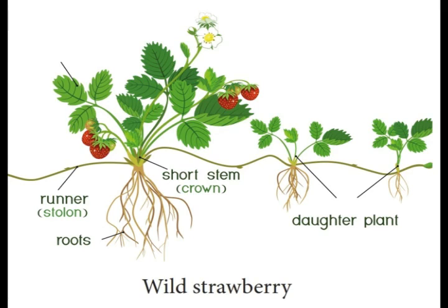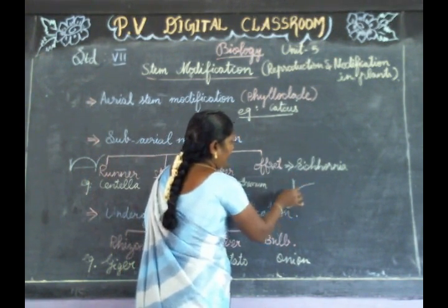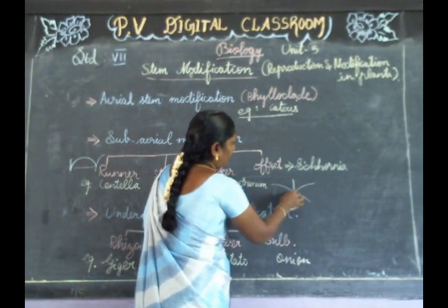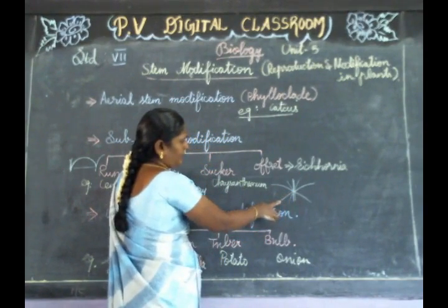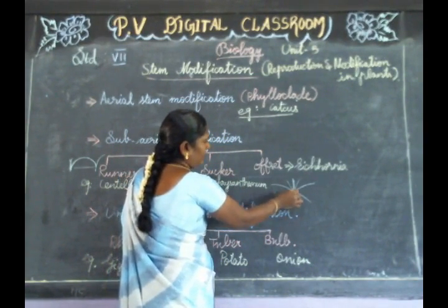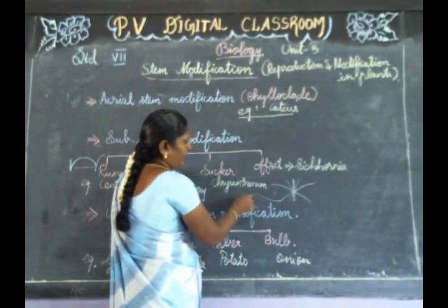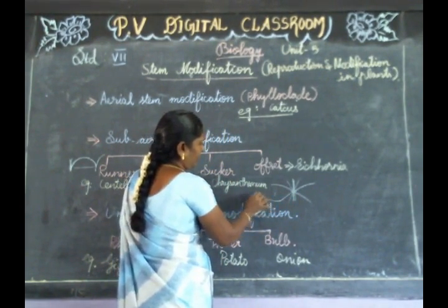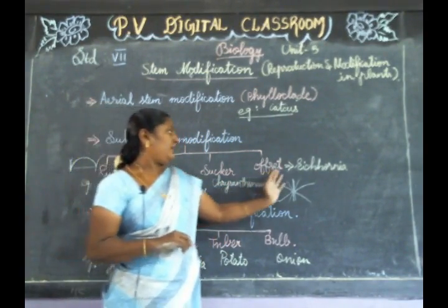The next one is the sucker plant. The sucker is different from the runner and stolon. The main axis produces diagonal branches, and from those branches, new runner stems and sub-branches are created, from which young plants are created. This is the sucker plant.